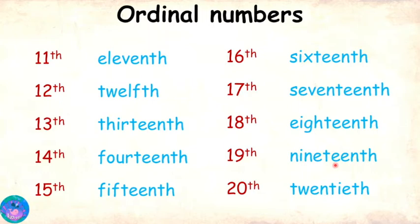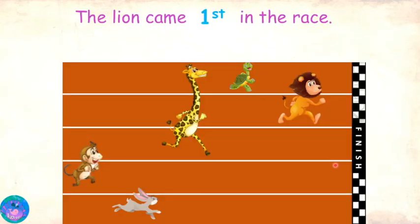Now children, can you give me some examples that show how we can use ordinal numbers? Of course! We can use ordinal numbers to tell the rank or position in a race or any other competition. For example, I will say the lion came first in the race and not lion came one in the race.